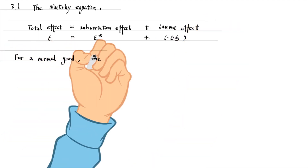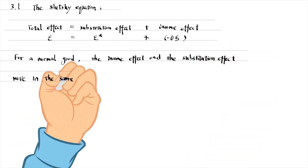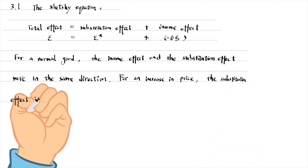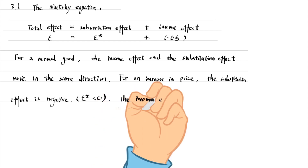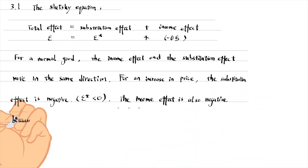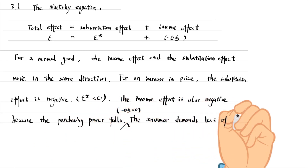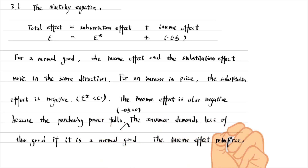For a normal good, the income effect and the substitution effect move in the same direction. For example, an increase in the price reduces the compensated demand for the good because of the substitution effect — the relative price of the good becomes higher. The substitution effect is negative. The income effect is also negative because the purchasing power falls. This is the case for a normal good: the income effect reinforces the substitution effect.